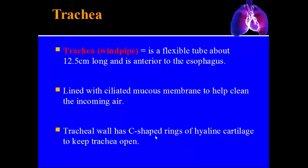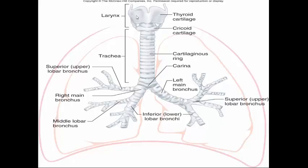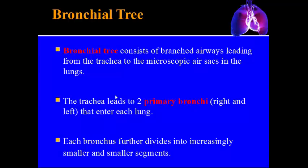Here's an image showing the thyroid cartilage and Adam's apple at the top, the C-shaped rings of hyaline cartilage along the trachea, and where the trachea forks into the left and right lungs. As the trachea divides into smaller and smaller units for each lung, this is called the bronchial tree — a very intricate series of branched airways leading from the trachea down to the tiny endpoints called alveoli.